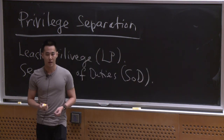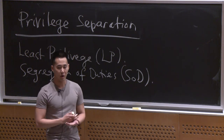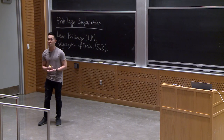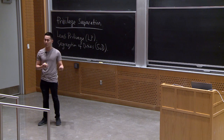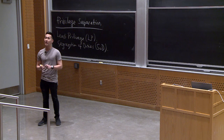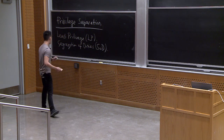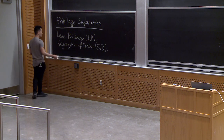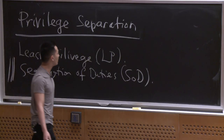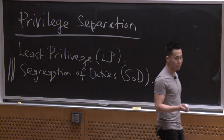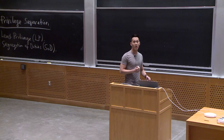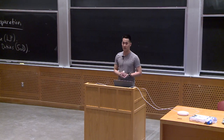Segregation of duties means, for example, if you are a financial controller who approves financial transactions within a company, you shouldn't be the same person making a purchase and then approving it yourself. There should be some segregation of duties so that you're being checked. No single principal should have too many privileges. But how do we implement privilege separation in practice — what technical controls can we use?